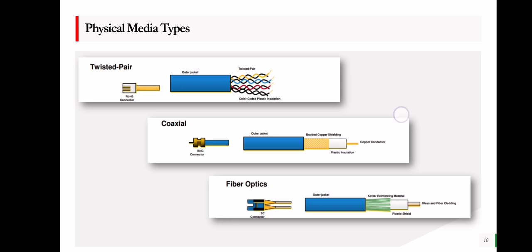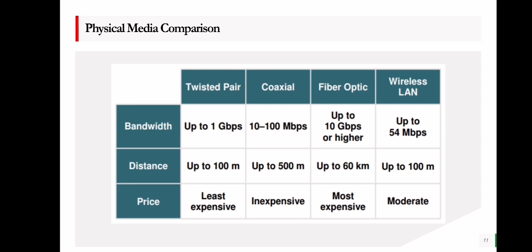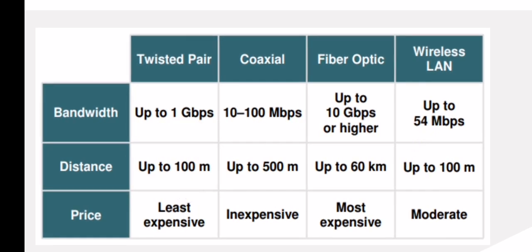Here are the physical media comparisons for each media type in terms of bandwidth, distance, and price. Bandwidth refers to how fast you can transmit packets over a network in a given time. For twisted pair, you can reach bandwidth up to 1 Gbps. For coaxial, you have 10 to 100 Mbps only. For fiber optics, you can reach up to 10 Gbps. For wireless, we have 54 Mbps, though this will still depend on your internet service provider.